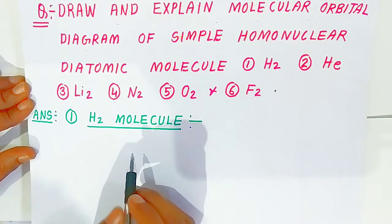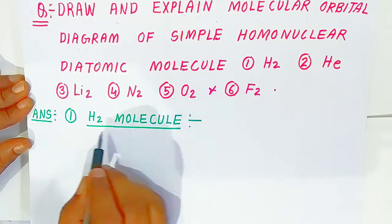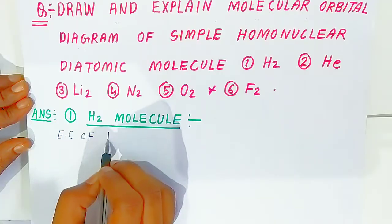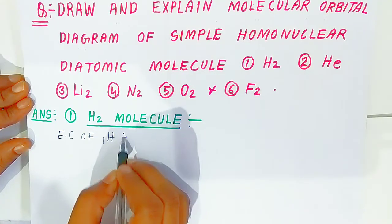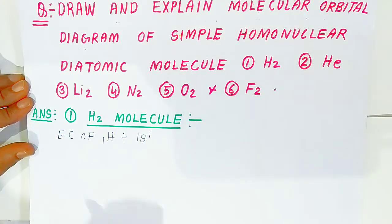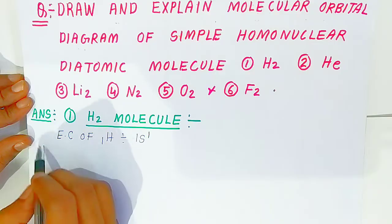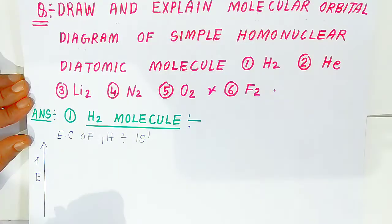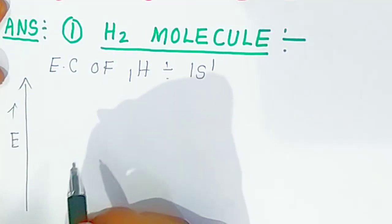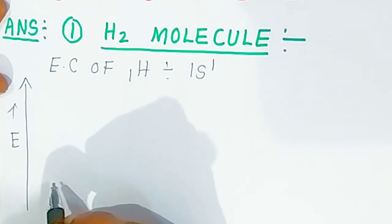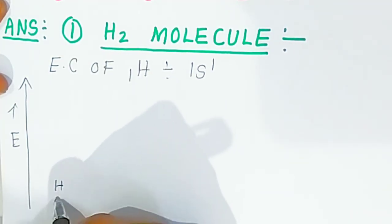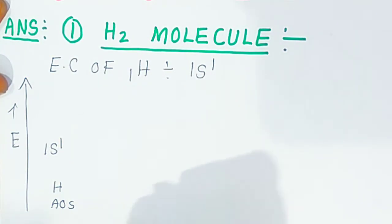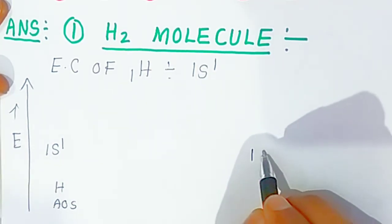First, we take the simplest molecule — the hydrogen molecule. To draw the molecular orbital diagram of hydrogen molecule, you should know the electronic configuration of the hydrogen atom. Hydrogen has atomic number 1 and electronic configuration 1s¹. Now, on the y-axis we represent energy in increasing order from down to upward. The 1s¹ atomic orbital of one hydrogen atom combines with the 1s¹ atomic orbital of the other hydrogen atom.